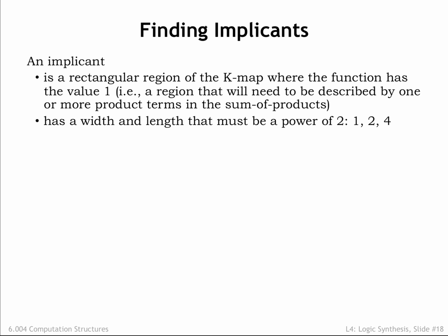We require the width and length of the implicant to be a power of 2. In other words, the region should have 1, 2, or 4 rows and 1, 2, or 4 columns.